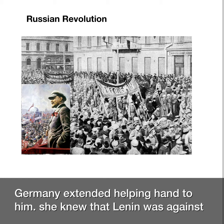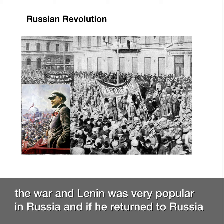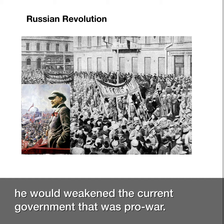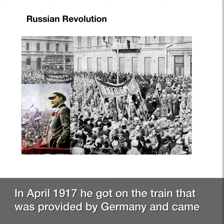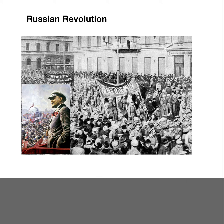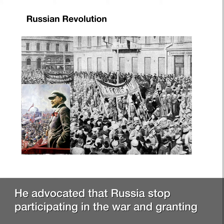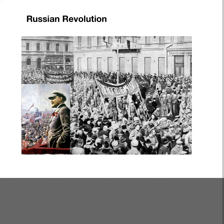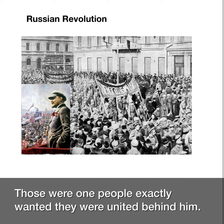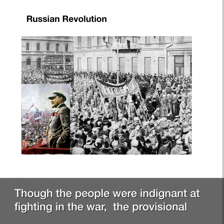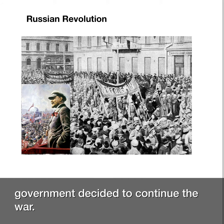Germany extended a helping hand to him. She knew that Lenin was against the war and very popular in Russia, and that if he returned, he would weaken the current pro-war government. In April 1917, he got on a train provided by Germany and came back to Russia. He advocated that Russia stop participating in the war, grant land to peasants, and give bread to the people — exactly what people wanted. They united behind him. Though people were indignant at continuing the war, the Provisional Government decided to continue it.